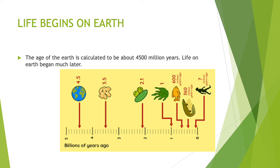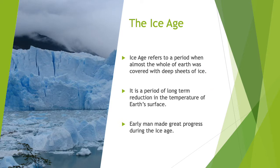It was during the Ice Age that early man started traveling from one place to another in order to get a suitable climate. So we need to learn about the Ice Age. The term Ice Age refers to a period when almost the whole of Earth was covered with deep sheets of ice. Ice Age is the period of long-term reduction in the temperature of Earth's surface.